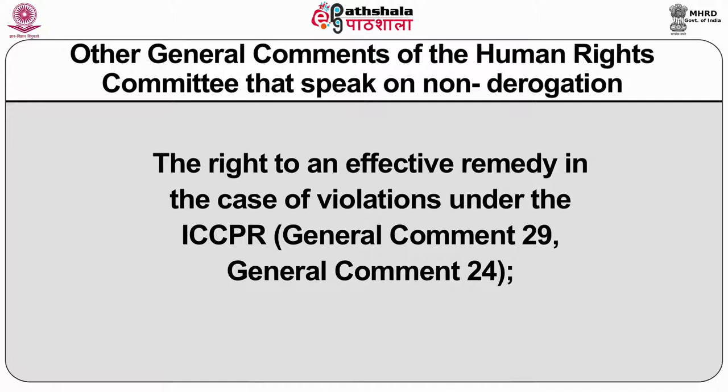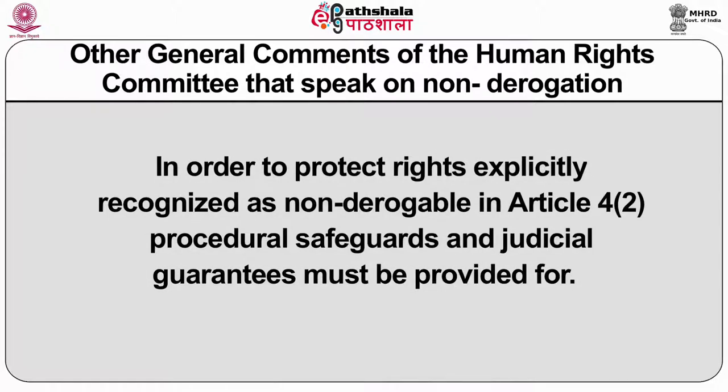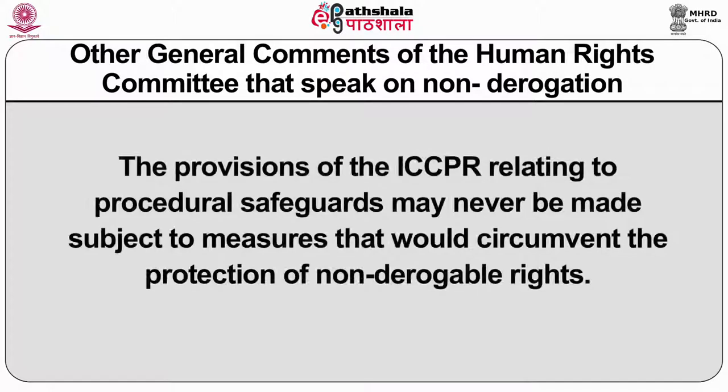The right to an effective remedy in the case of violations under the ICCPR (General Comment 29, General Comment 24): in order to protect rights explicitly recognized as non-derogable in Article 4(2), procedural safeguards and judicial guarantees must be provided. The provisions of the ICCPR relating to procedural safeguards may never be made subject to measures that would circumvent the protection of non-derogable rights.